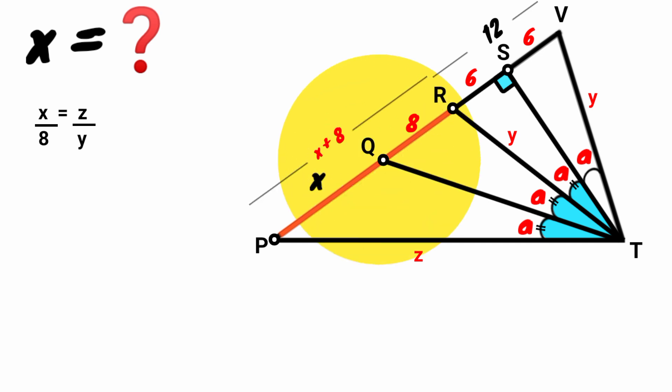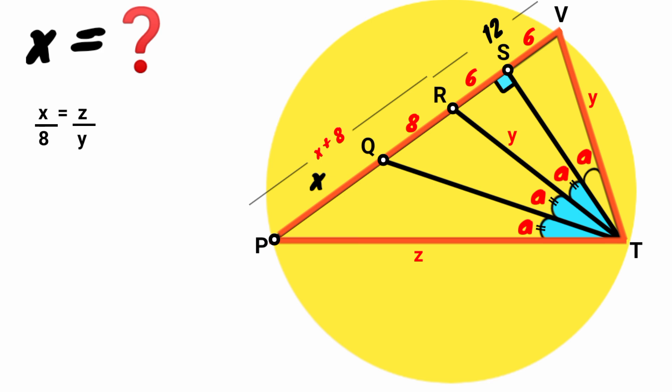Now let's look at this triangle PTV. If you look at this line RT, it divides this angle of a into this which is 2a and this which is also 2a. Hence we can say it bisects the angle.